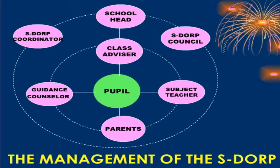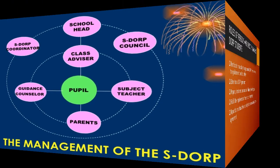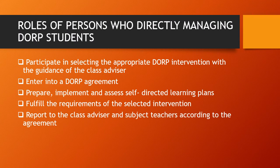Here is the management of the school DORP program. Roles of persons who directly manage the DORP students: participate in selecting the appropriate DORP intervention with the guidance of the class advisor; enter into a DORP agreement; prepare, implement, and assess self-directed learning plans; fulfill the requirements of the selected intervention; and report to the class advisor and subject teachers according to the agreement.